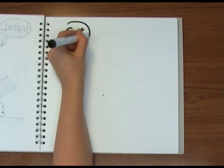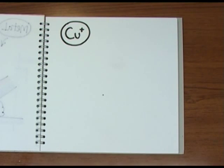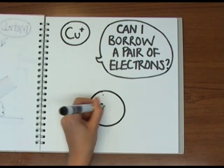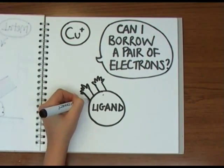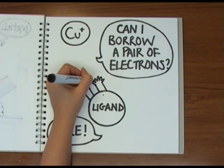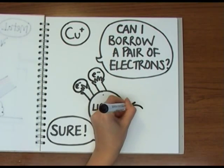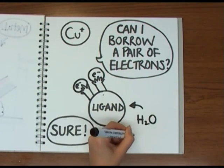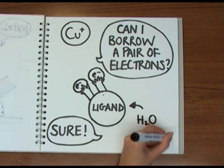But because copper is a transition metal, a group that also includes iron, nickel and manganese, it can form weak bonds with molecules known as ligands by borrowing electrons from them. Ligands can be any molecule that can donate electrons, so water or ions like chloride and nitrate.